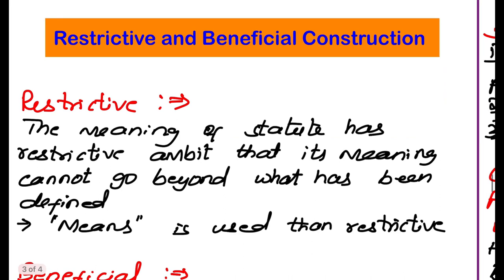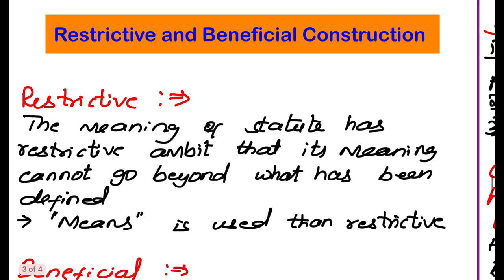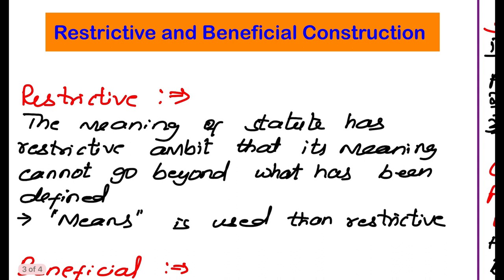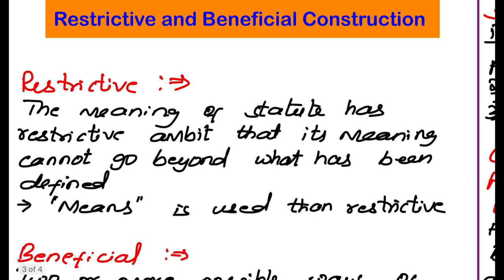The next important concept is restrictive and beneficial construction of statute. Restrictive construction means the meaning of the statute has a restrictive application — the meaning cannot go beyond what has been defined. We have to see only the meaning of the statute and cannot put any logical explanation into it. Only what the statute means is to be considered. This is called the restrictive approach of construction.